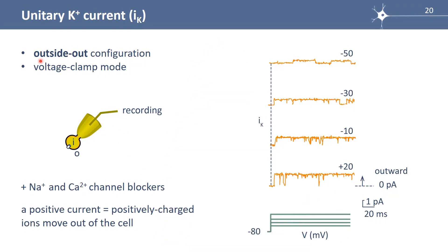To record a unitary potassium current, we use the outside-out configuration to get a small piece of membrane under the pipette, and voltage clamp mode to record a current. We add in the bath sodium and calcium channel blockers because we don't want to record anything other than a potassium channel. Here, we hold the membrane at minus 80 millivolt and we apply depolarizing steps of increasing amplitude.